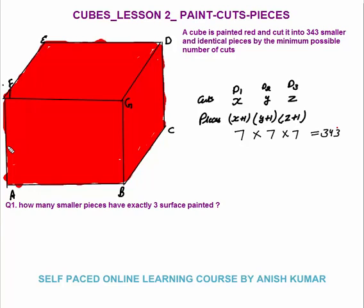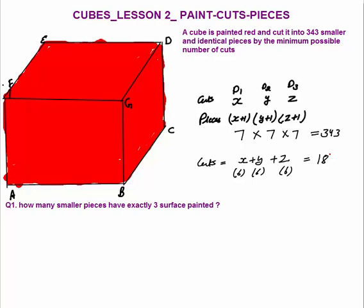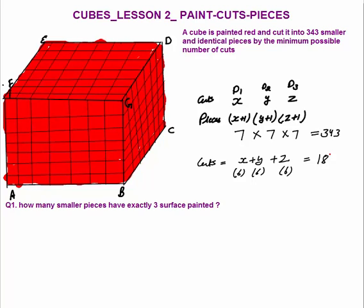So (x+1)(y+1)(z+1) should be 7×7×7 = 343. Then x+1=7 means x=6, y+1=7 means y=6, and z+1=7 means z=6. The total number of cuts is x+y+z = 6+6+6 = 18. This means 6 cuts in each direction. If we make 6 cuts in each direction the cube will be cut into 343 smaller but identical pieces.